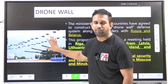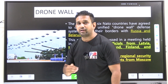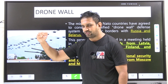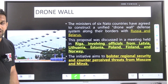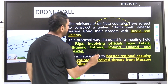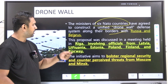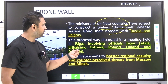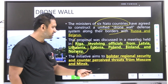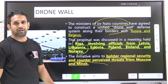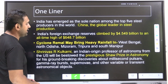NATO Drone Wall: NATO wants to build a drone wall along the borders of six countries that share a border with Russia or Belarus. Ministers of six NATO countries have agreed to a unified drone wall to defend against perceived threats from Russia and Belarus. The six countries are Latvia, Lithuania, Estonia, Poland, Finland, and Norway. The initiative aims to bolster regional security.